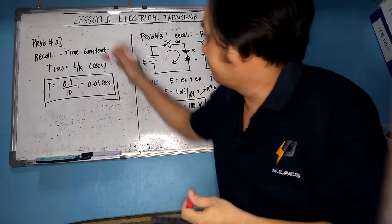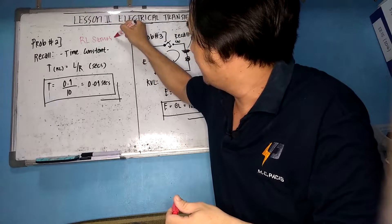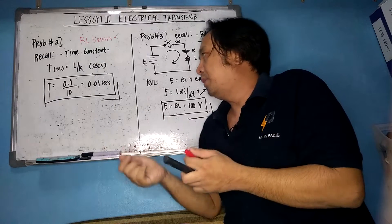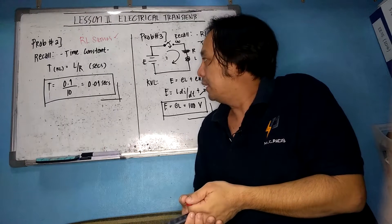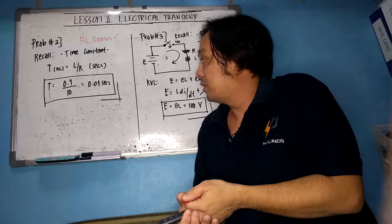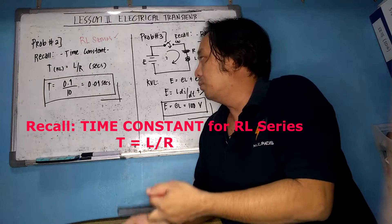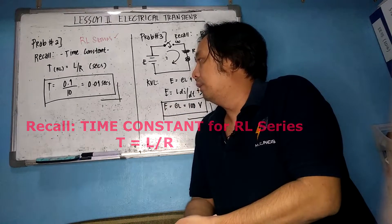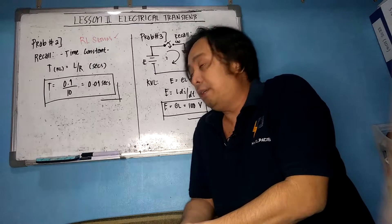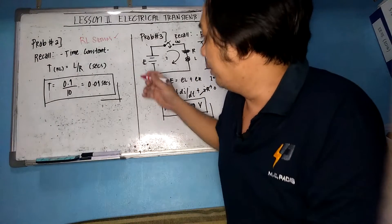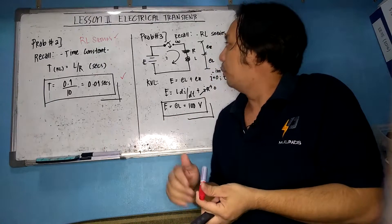Problem number two involves an RL series circuit. The time constant is simply τ = L/R, where L is in henries and R is in ohms. Substituting: τ = 0.1 / 10 = 0.01 seconds. Very simple problem.